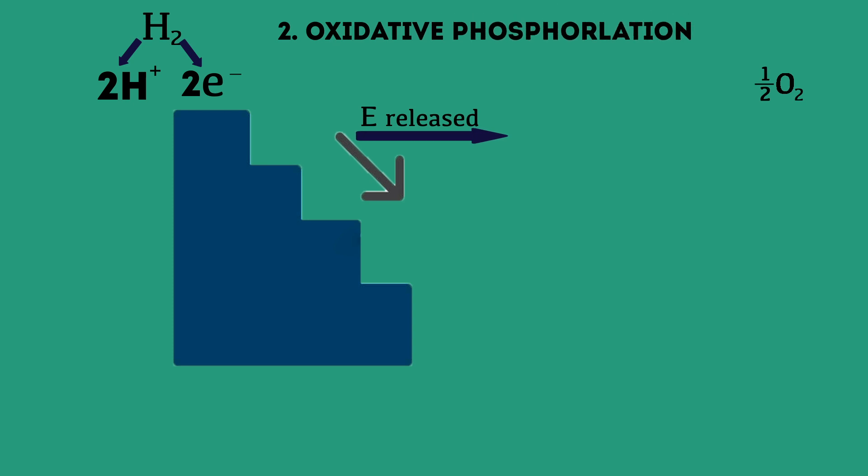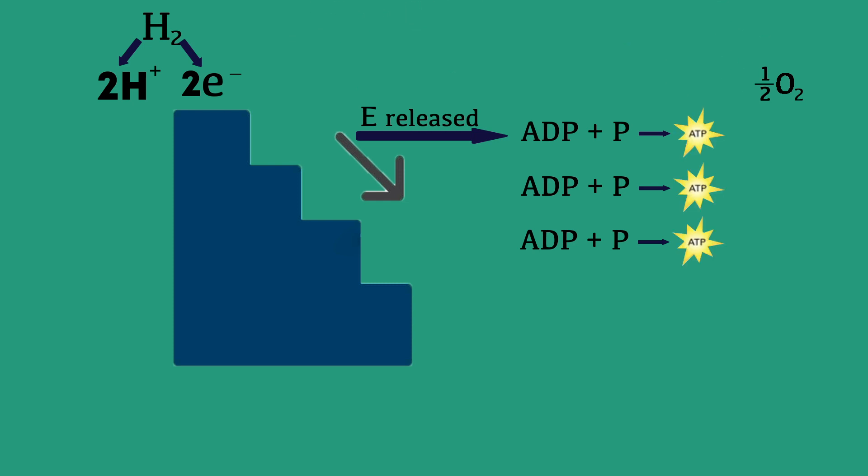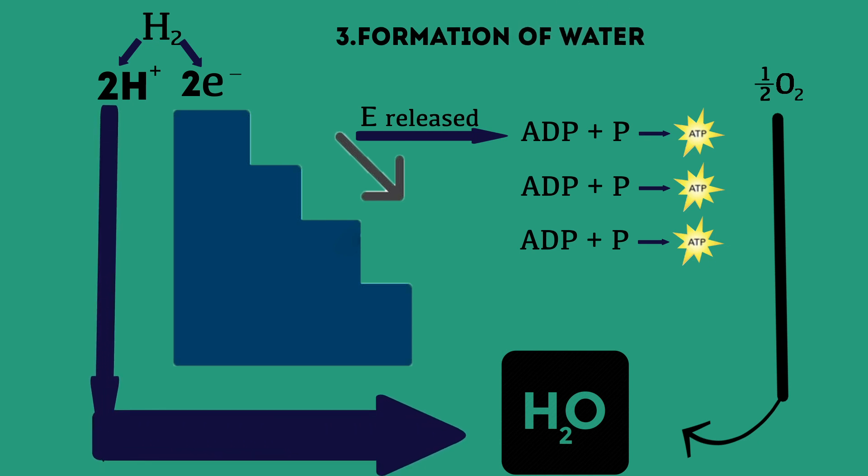Second, oxidative phosphorylation. ATP is formed from ADP and phosphate group by using the energy released during the passage of electrons that are carried on the cytochromes from high to low energy level. Those 2 electrons combine with 2 protons and 1 oxygen to form water.